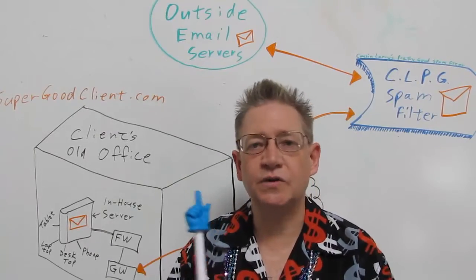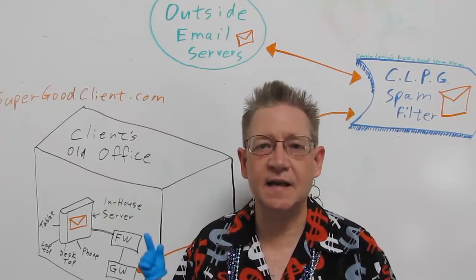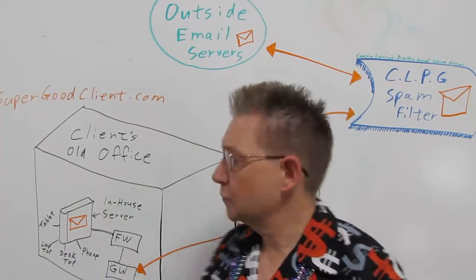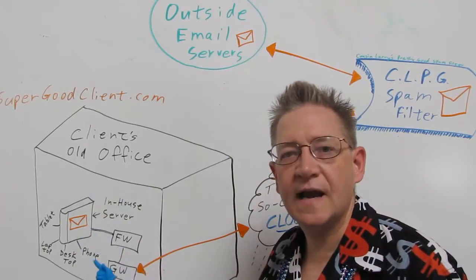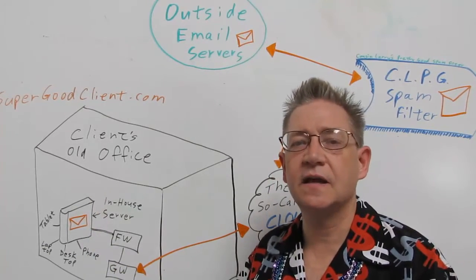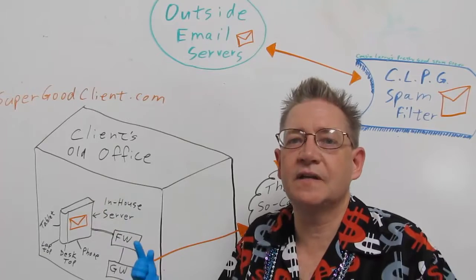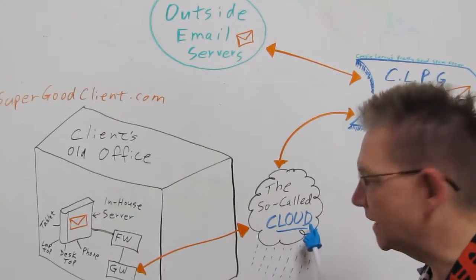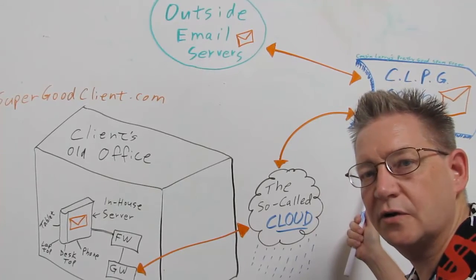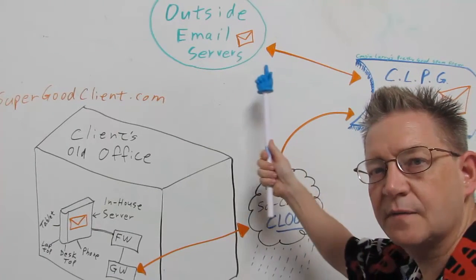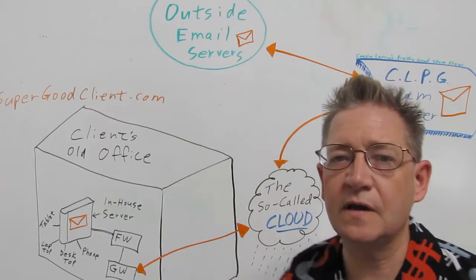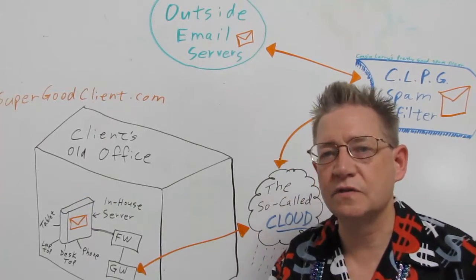Hi, this is Carl. Last time we talked about setting up your hosted spam filter, so basically this is what it looks like. You've got your in-house exchange server. All of your devices are connected to that and it's all working exactly the way it's supposed to. Email is sent out through your internet service provider to Cousin Larry's pretty good spam filtering service, and from there it goes out to anybody who's sending or receiving email from you. So everything goes through the spam filter.